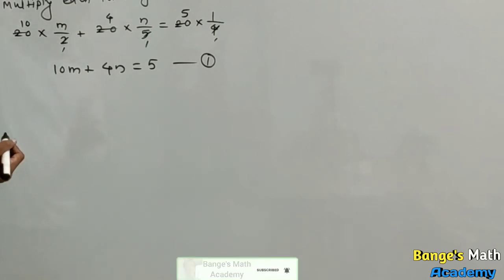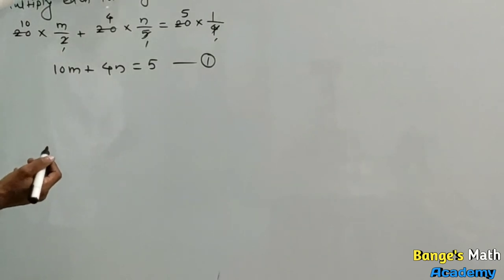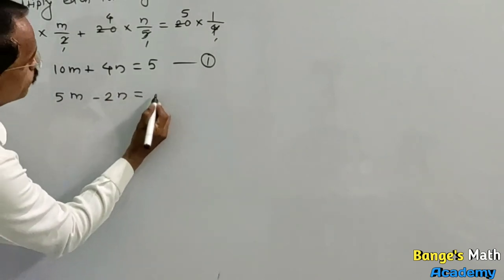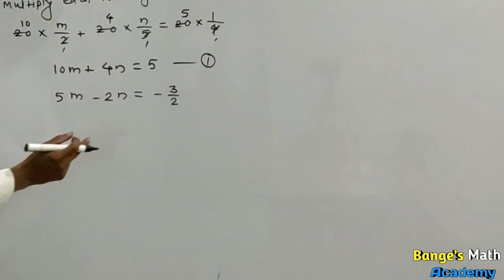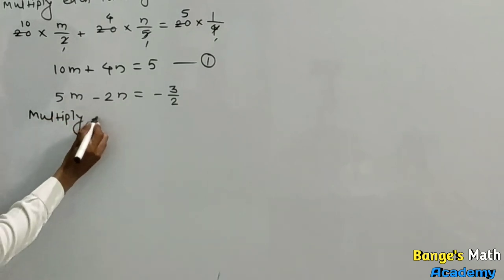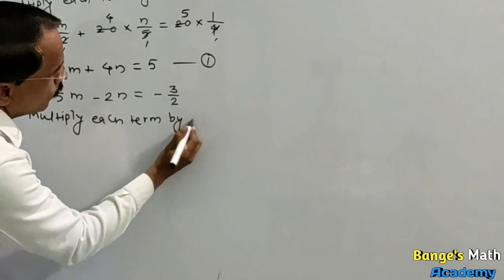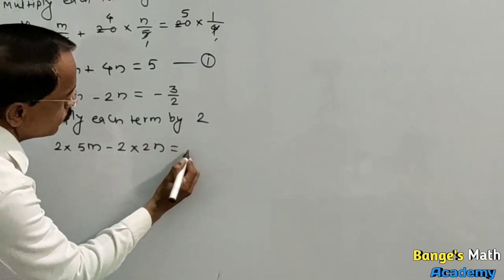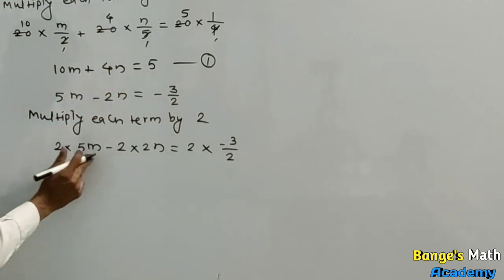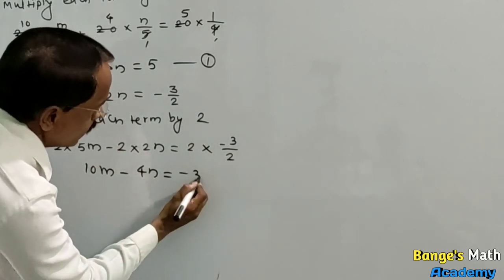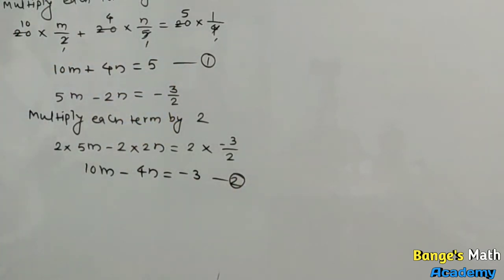Consider the second equation. Put 1 upon 3x plus 4y equal to m and 1 upon 2x minus 3y equal to n. Then we get 5m minus 2n equal to minus 3 upon 2. To eliminate the denominator 2, multiply each term by 2: 10m minus 4n equal to minus 3. Give equation number 2.